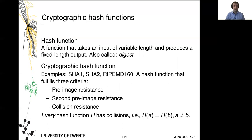Cryptographic hash functions are also highly interesting in this regard, and there's a certain similarity. A hash function is simply a function that takes an input of arbitrary length but produces an output that is always of the same length — we call these outputs digests. What makes a hash function cryptographic, like SHA-1, SHA-2, or RIPE-MD-160, is that we believe them to fulfill three criteria. This again has to do with one-way functions. We believe these properties to hold, but we don't actually have proof — though we are still very sure of it.